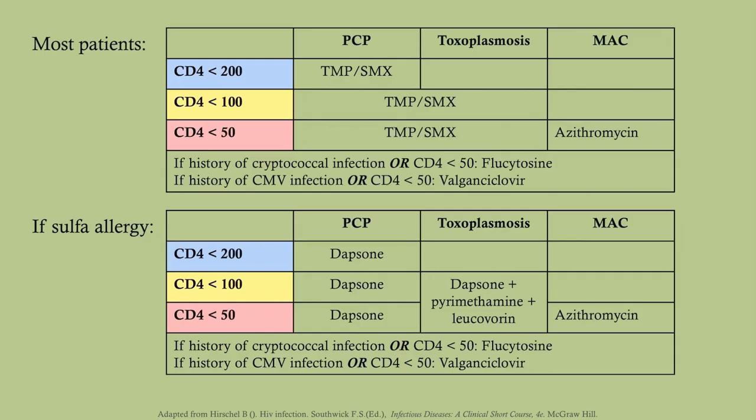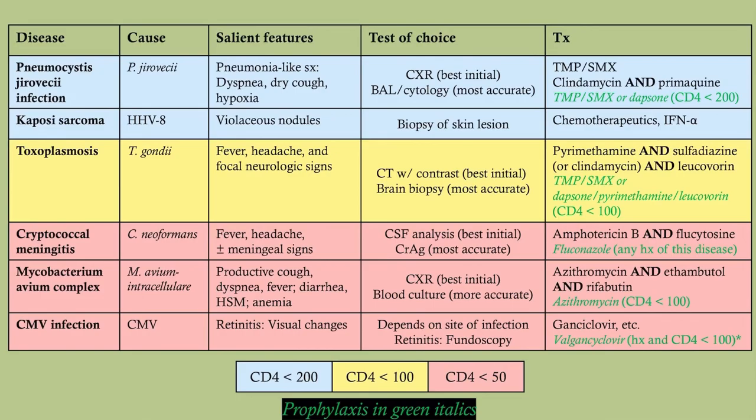To summarize prophylaxis: for non-sulfa-allergic patients, give Bactrim when CD4 drops below 200, add azithromycin below 50, and add cryptococcal and CMV prophylaxis below 50 or with history of infection. For sulfa-allergic patients, start with dapsone, add pyrimethamine and leukovorin below 100, then add azithromycin below 50, with the same rules for cryptococcal and CMV prophylaxis.